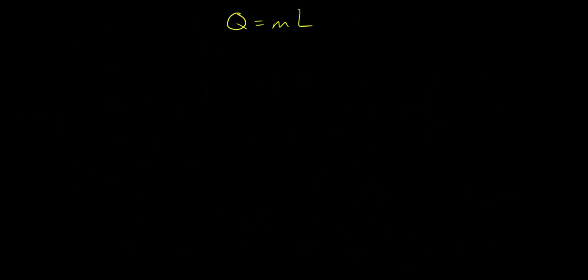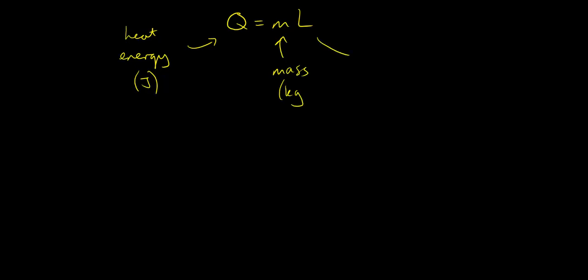The energy needed can be calculated simply using the equation Q = mL, where Q is the heat energy in joules, m is the mass in kilograms, and L is the specific latent heat — either of fusion or vaporization — in the units joules per kilogram.